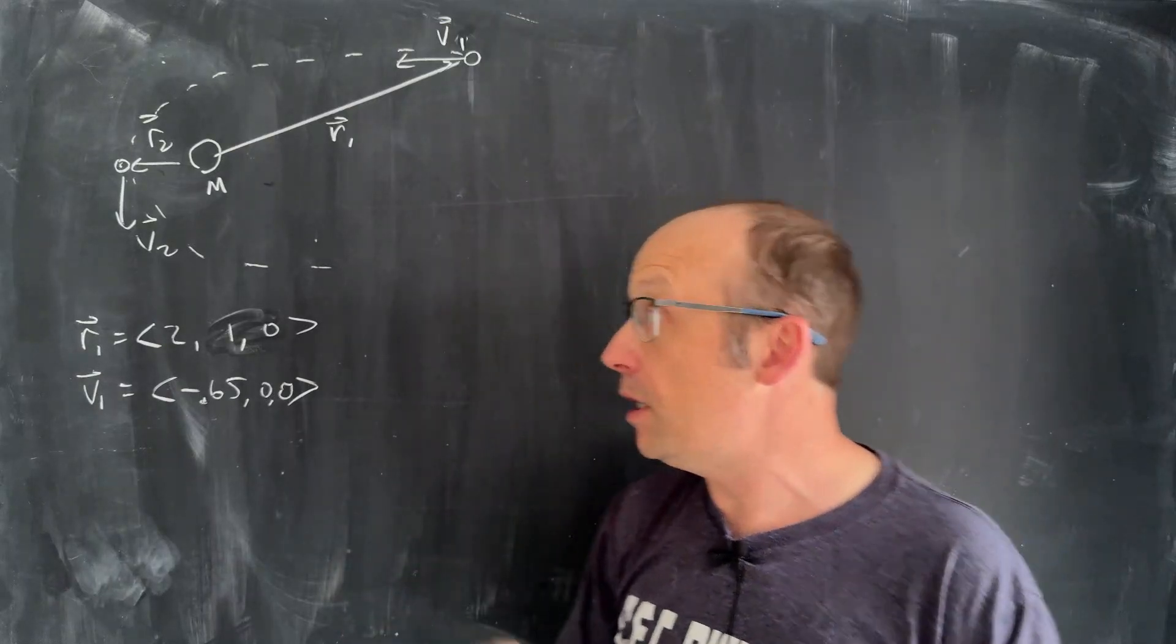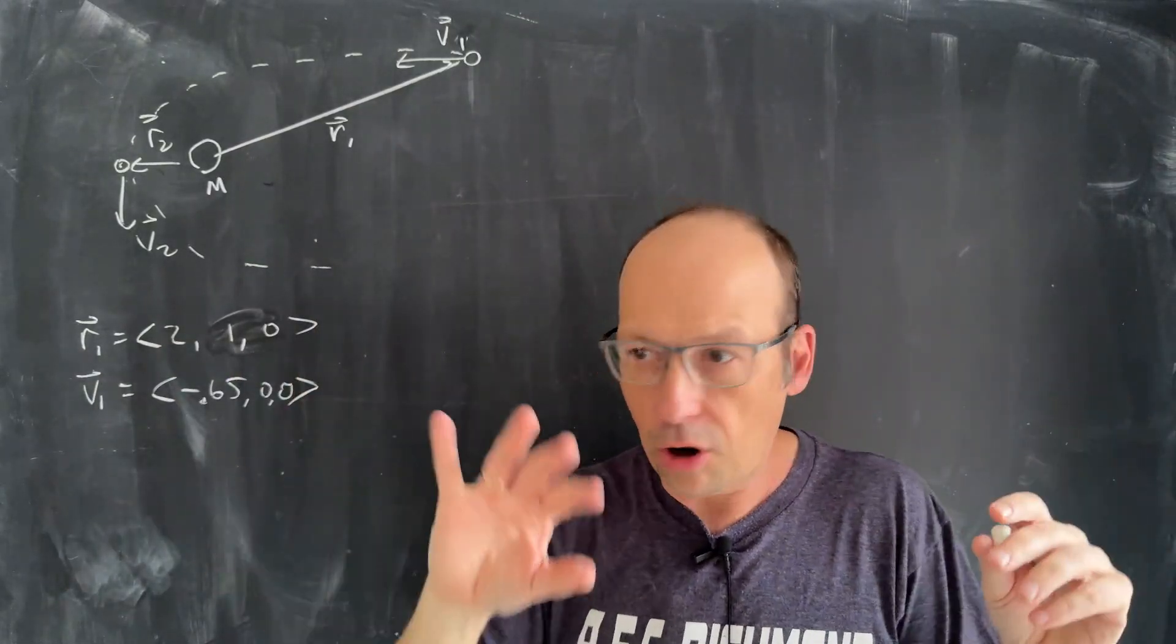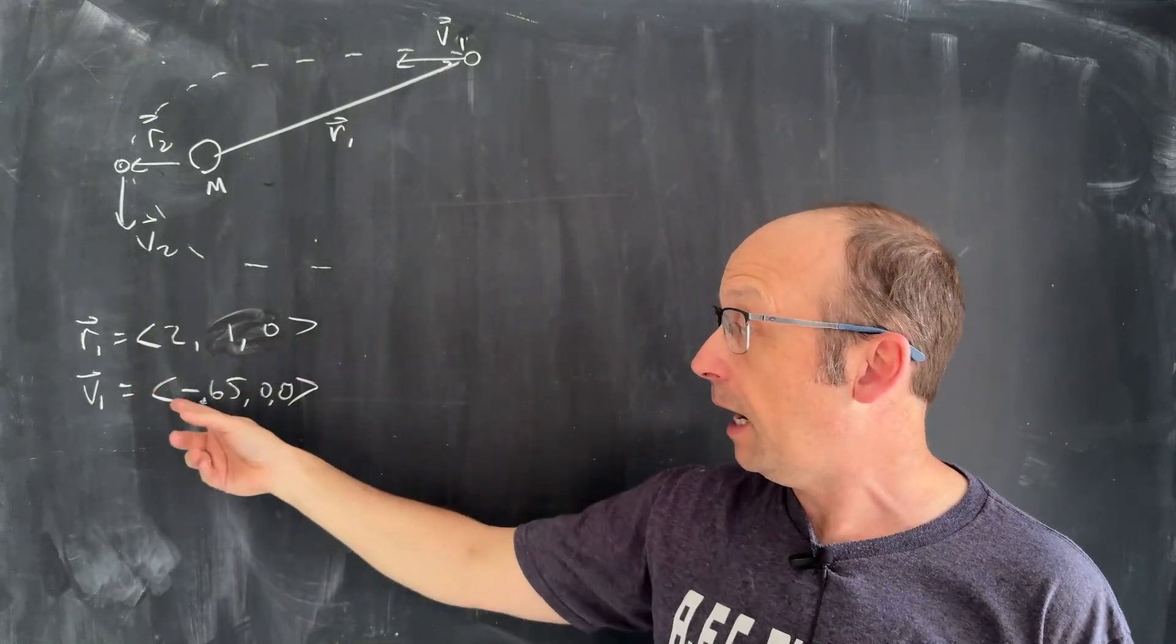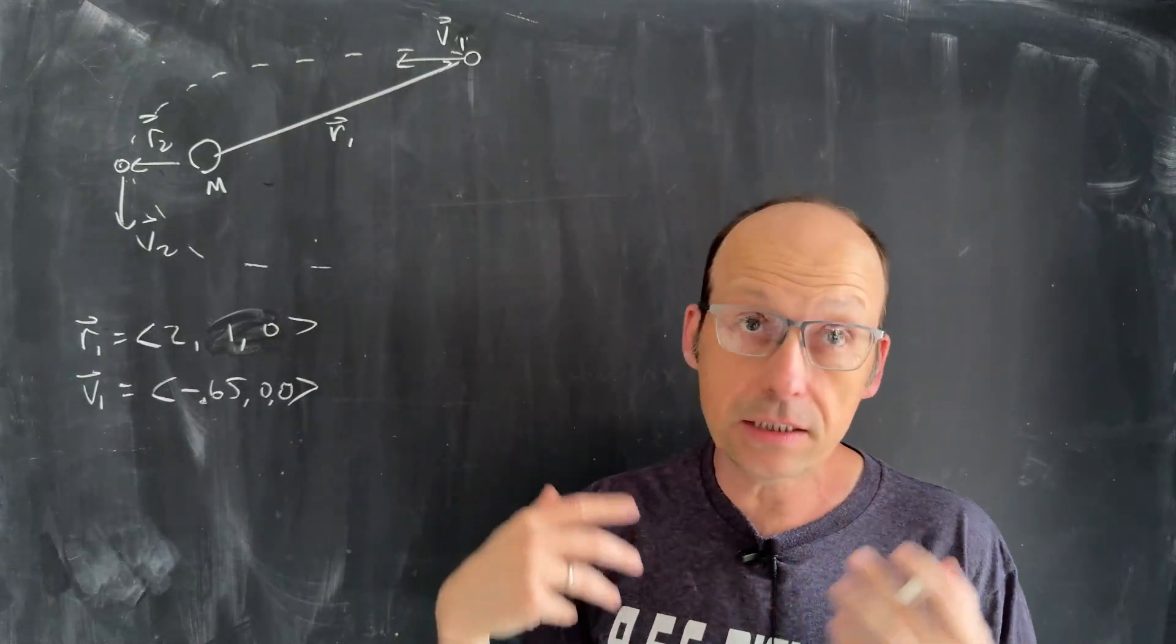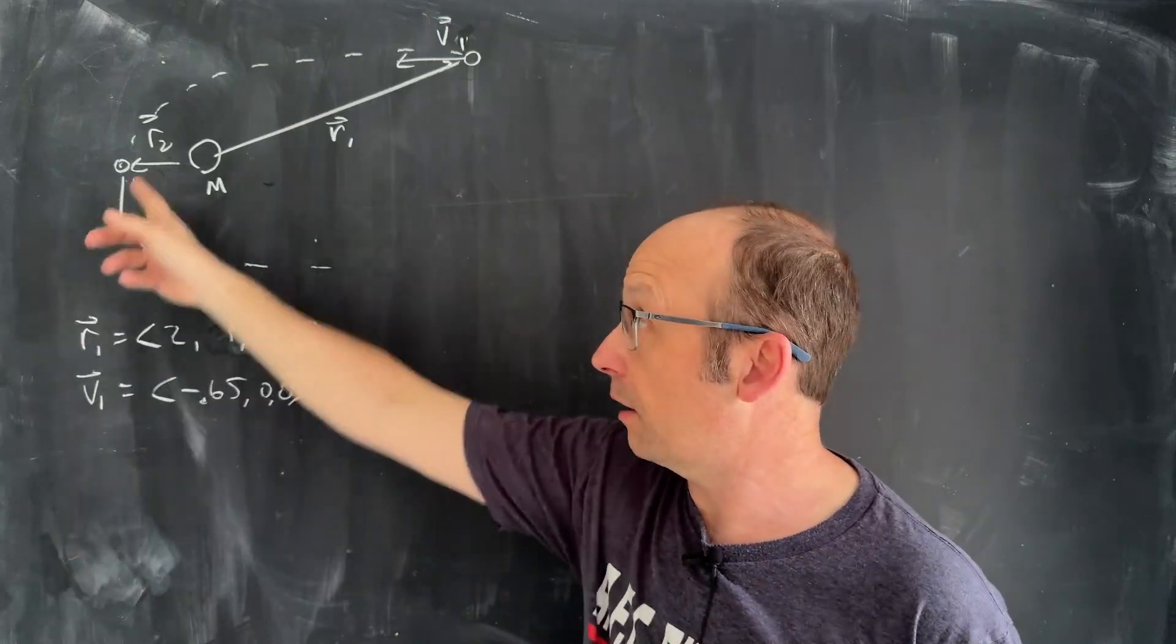The problem is that we have this comet at this position right here with some velocity. It's moving towards the sun, and then it goes zoom, and it comes by. So the question is, if we know the initial position, I'm using just arbitrary units, it starts at position 2, 1, 0, and its initial velocity is in the x direction. What is the distance of closest approach and what's the velocity of closest approach?